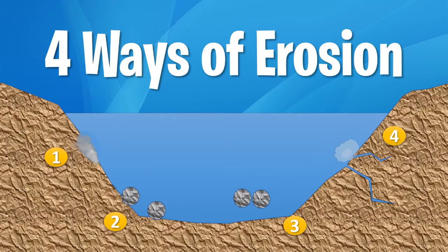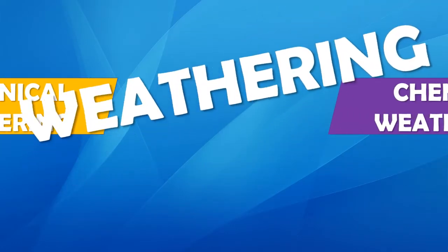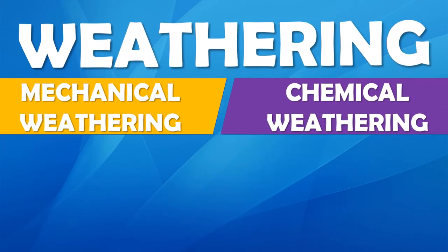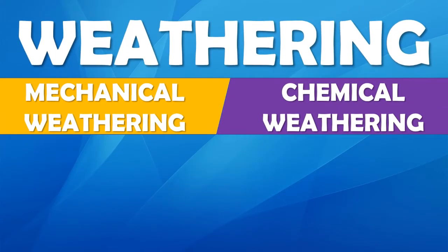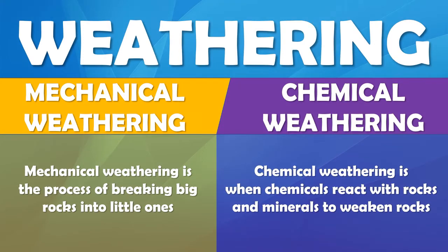In addition to erosion, coastal landscapes experience weathering. Weathering has two types: mechanical and chemical. Mechanical weathering is the process of breaking big rocks into little ones, whereas chemical weathering is when chemicals react with rocks and minerals to weaken those rocks.